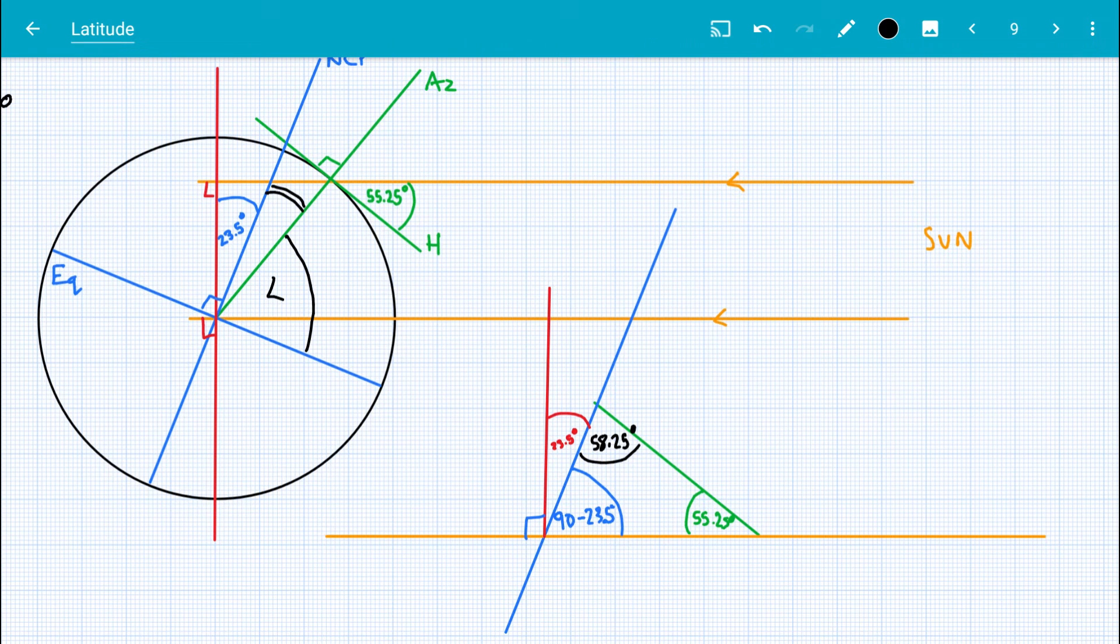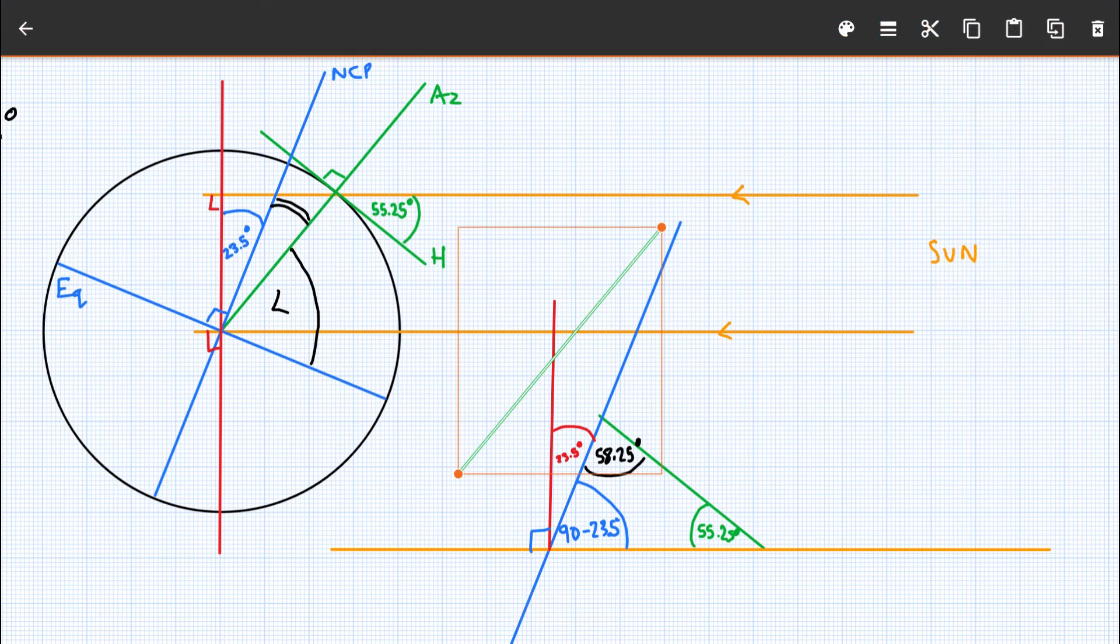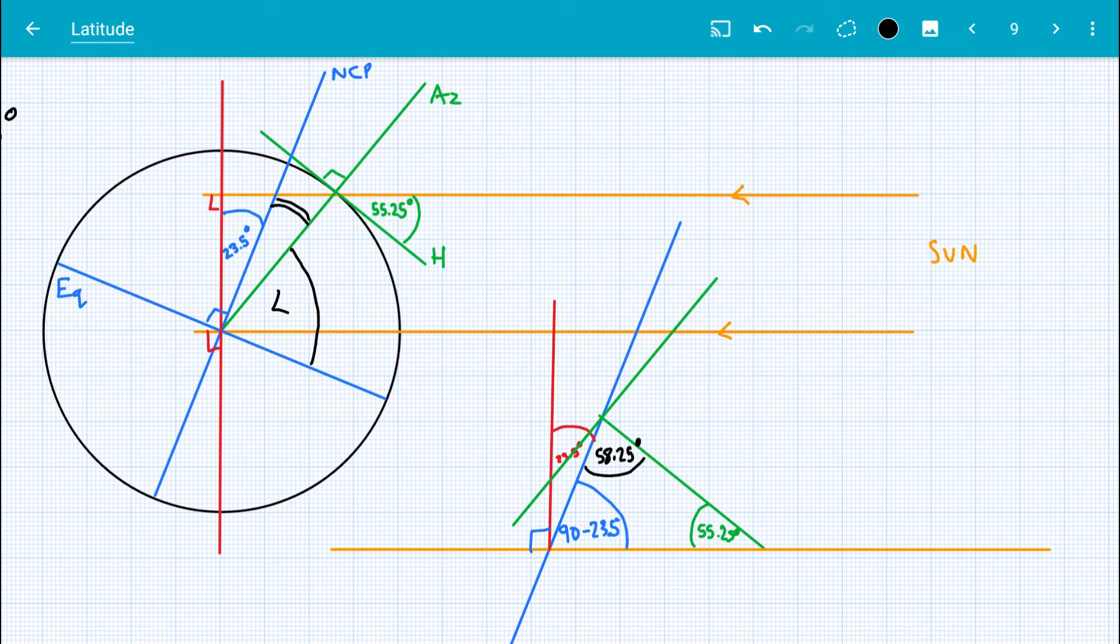Now, it's not the angle we want. The angle we want is the one between the azimuth and the north celestial pole. And what we've got there is an angle between the horizon and the north celestial pole. But that's okay. Let's just take our angle. Let's take this azimuth. Let's copy that, let's paste it over the top.